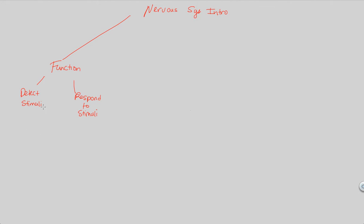Detecting stimuli can be elaborated a little bit further. The word stimuli is just the plural of stimulus. What we mean by detection is that this is going to occur when there's any sort of change — that's the key word — any sort of change that occurs. There's going to be a norm, and then something different happens. That difference can be either inside or outside the body.